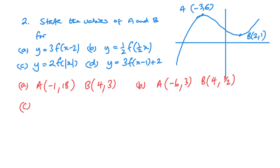This next one involves a modulus graph — modulus of x — so you'll see the same on both sides of the axis. Point a would have been (−2, 1) just applying the modulus to x, and then with a vertical stretch of 2, point a becomes (−2, 2). Point b stays the same for x and the y is stretched by a factor of 2.